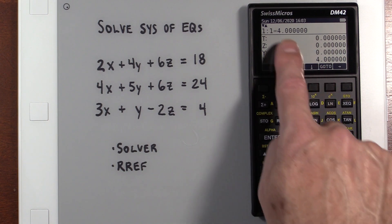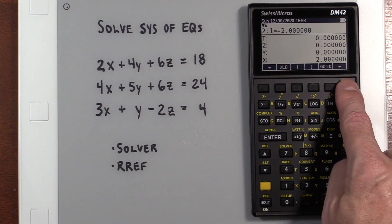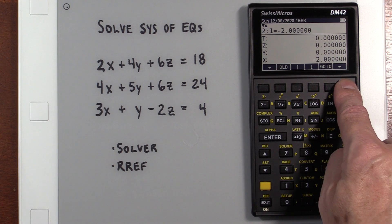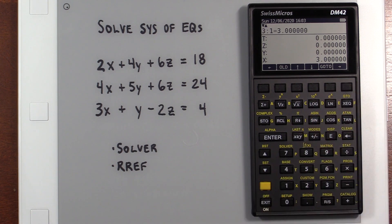And it will find our solution. We have a four for our X value, a negative two for Y, and a three for Z. It works really well, and that's quick.